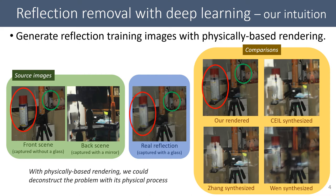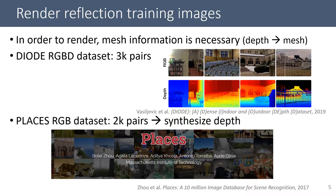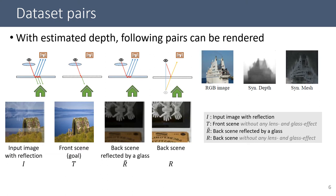With physically-based rendering, we could deconstruct the problem with its physical process. To do that, we utilize existing RGB-D and RGB datasets. With given depths or synthesized depths, we create meshes for each image.